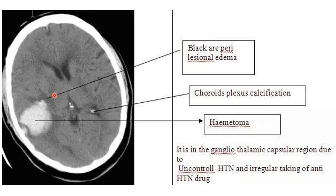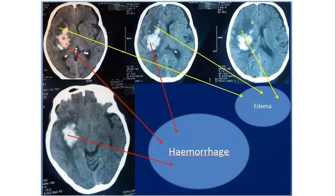Most of the time, not always, hemorrhagic stroke at the basal ganglia is due to uncontrolled hypertension, which causes rupture or bleeding from this arteriole. Here is a patient with uncontrolled hypertension — an intraparenchymal hematoma at the right basal ganglia distribution, most likely from the lenticulostriate branch of the right MCA. It is surrounded by edema causing mass effect on the adjacent ventricle with possible midline shift, and the overlying sulci are effaced. The hematoma extends over several CT sections, indicating it is quite large.